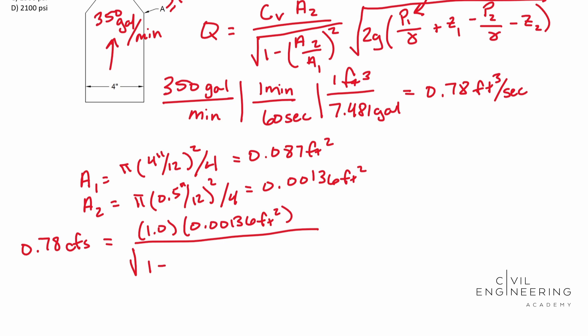Square root of one minus. And then we see our A2. So our A2 is 0.00136. That is square feet. We're going to put that over A1, which is 0.087 square feet. And then we need to square that and square root all of that.